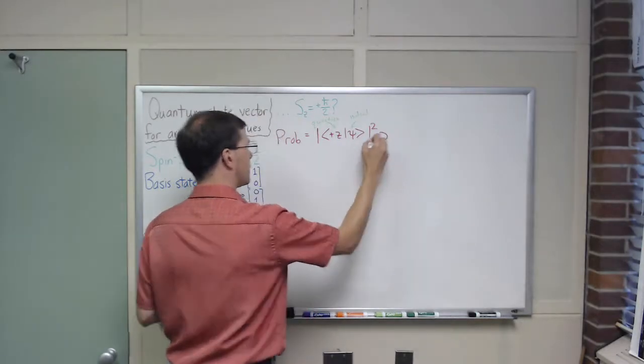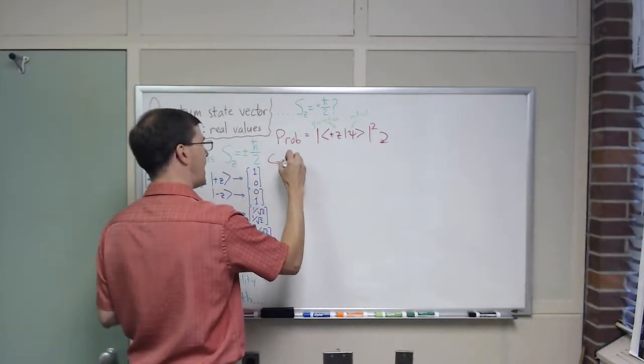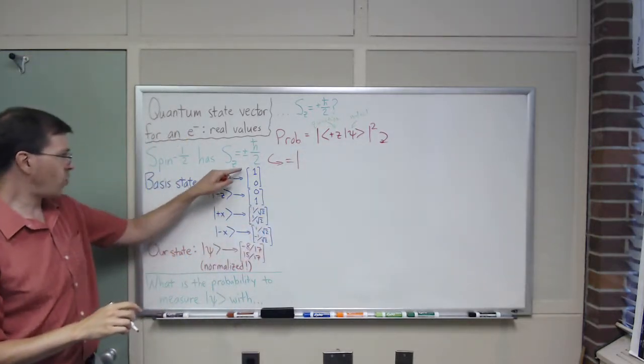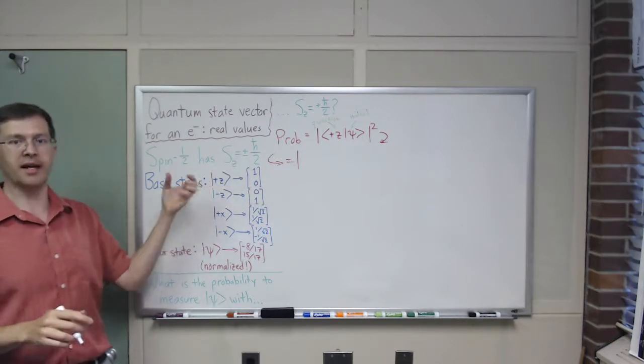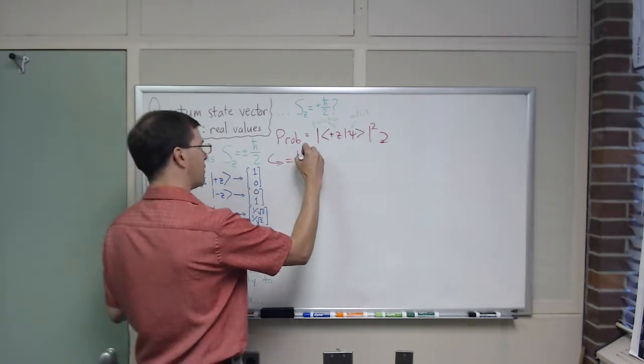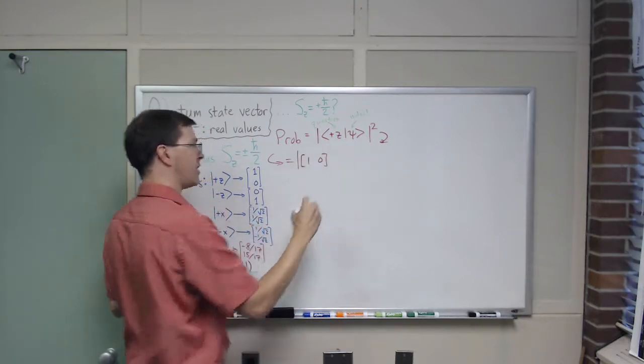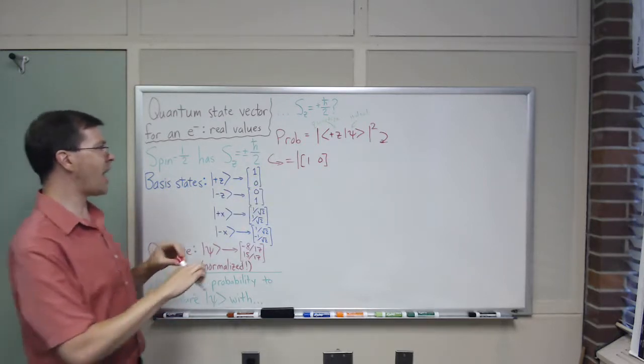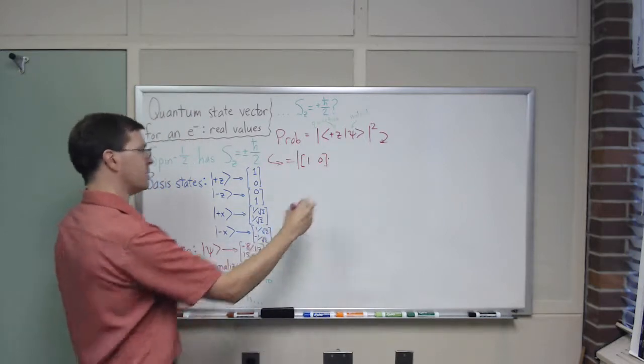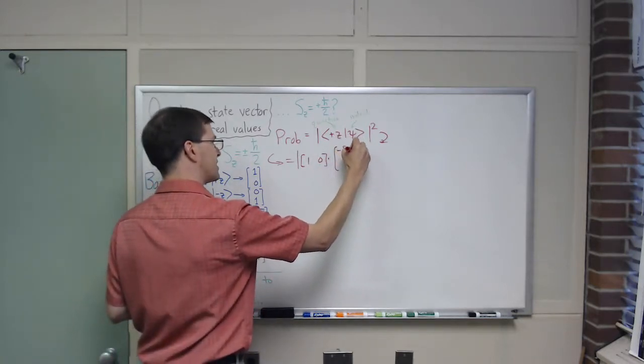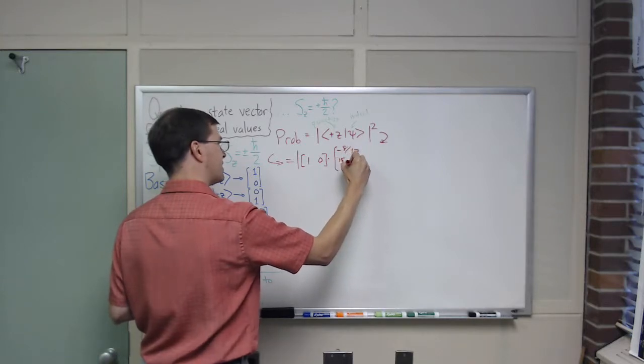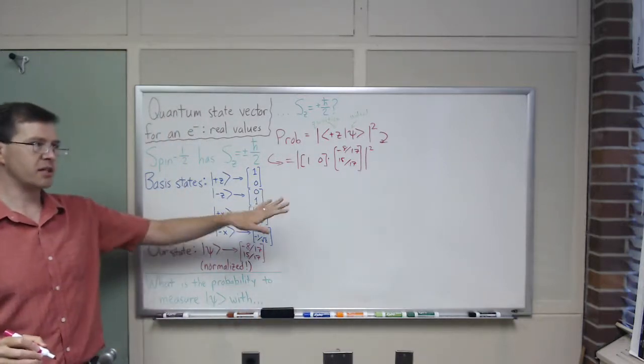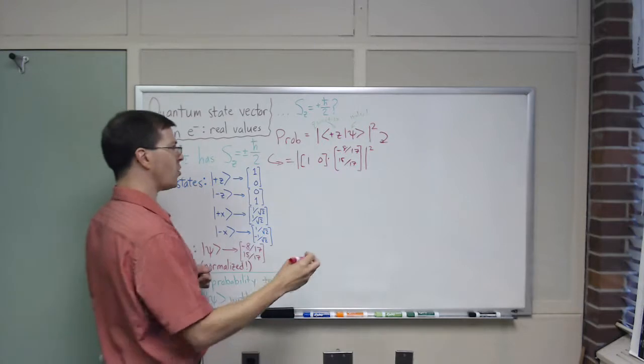So let's see how that plays out in practice. Let me come around here, that is equal to, well, absolute square of my plus Z state, it's 1, 0, so to get the bra version I do the transpose, and the complex conjugate, but that doesn't matter, so that's 1, 0, as my bra, times matrix multiplied by my ket, we know what that is, minus 8 17ths and 15 17ths, and whatever that gives me, I'm going to take its square, absolute square is a complex number thing, but I'm going to take the square of it.